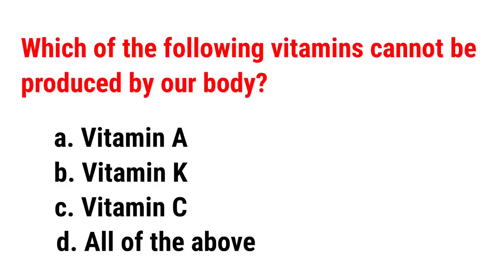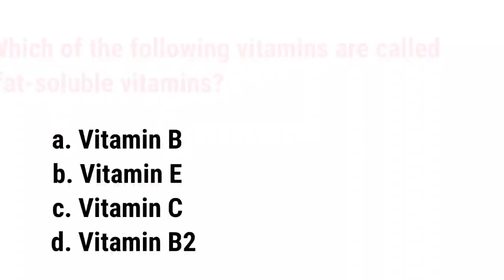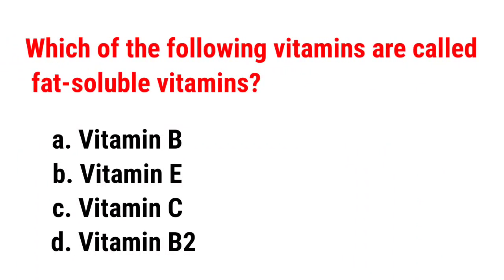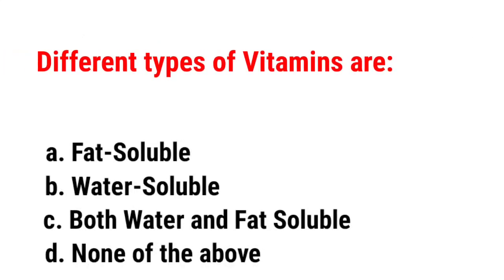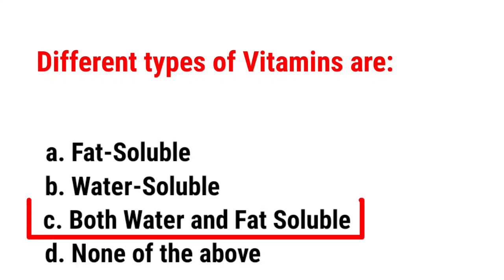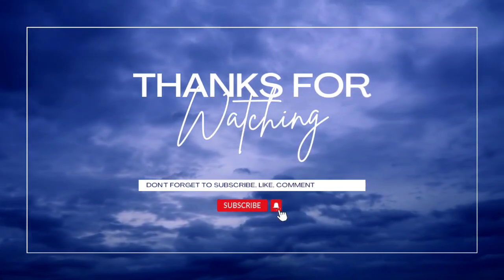Which of the following vitamins cannot be produced by our body? Correct answer is Vitamin E. Different types of vitamins are: Correct answer is both water and fat soluble. If you like the video, please do subscribe to my channel and press the bell icon. Bye-bye.